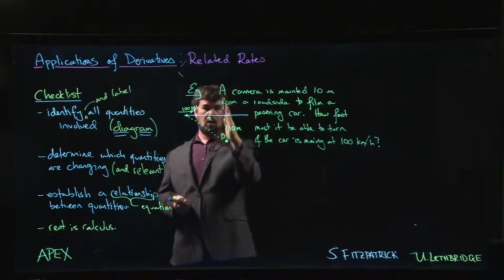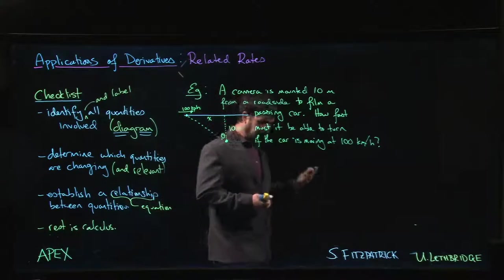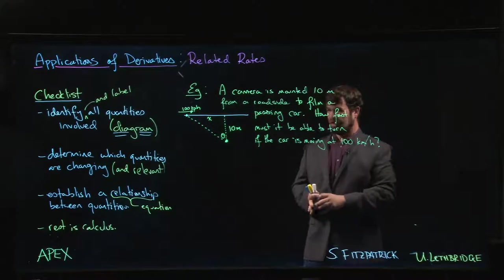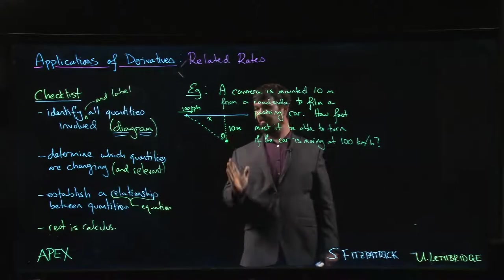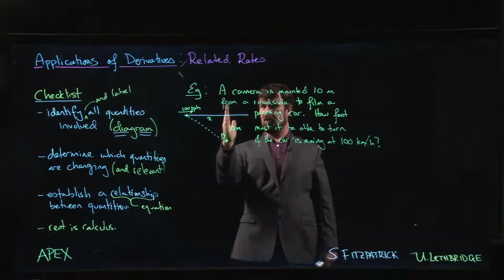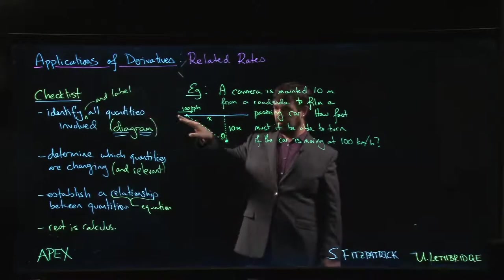You can probably guess without doing any math here that the point at which that camera is going to need to turn the fastest is right when the car is level with the camera. When the car is way off in the distance, you don't really need to be moving very much.